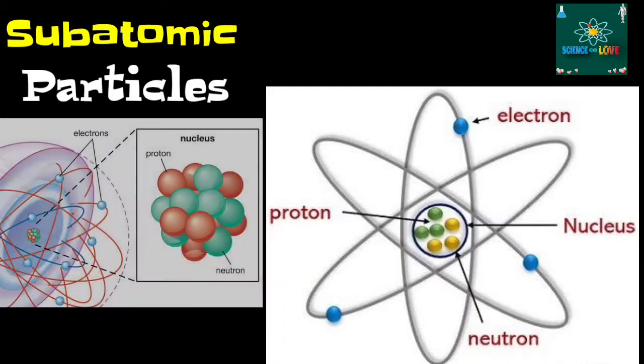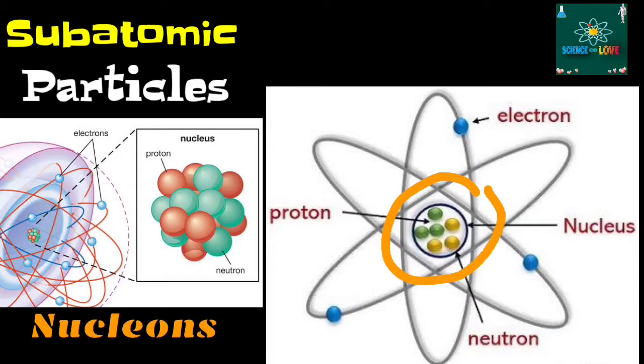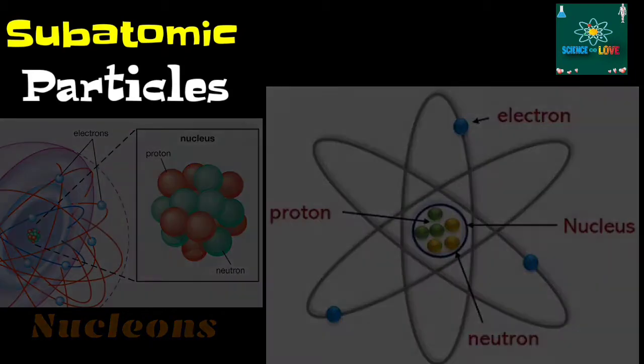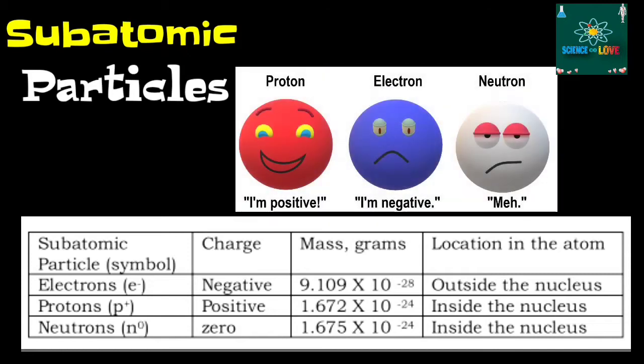Protons and neutrons are called nucleons because they are found inside the nucleus. The table below shows some of the properties of the three subatomic particles.